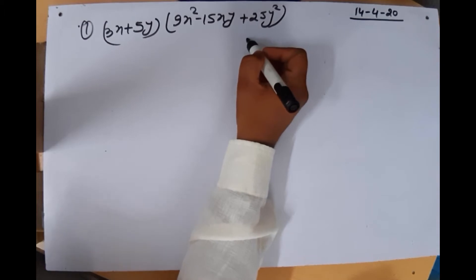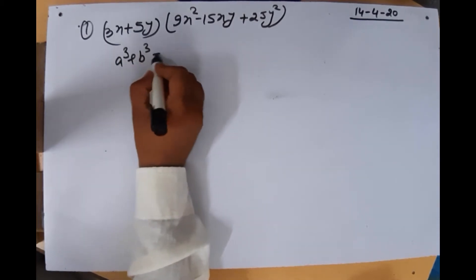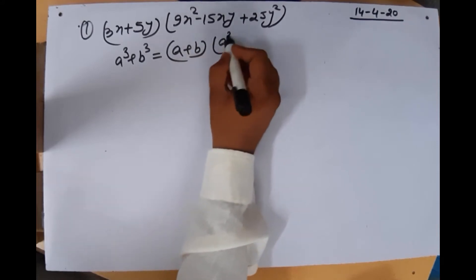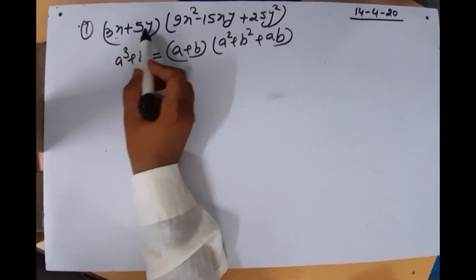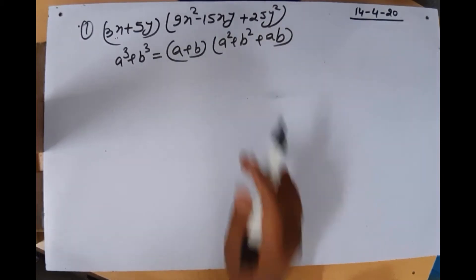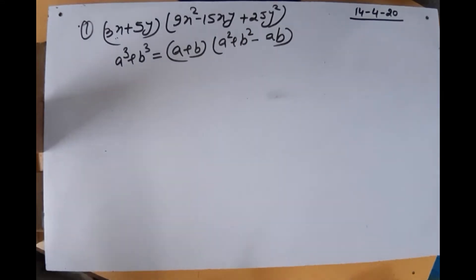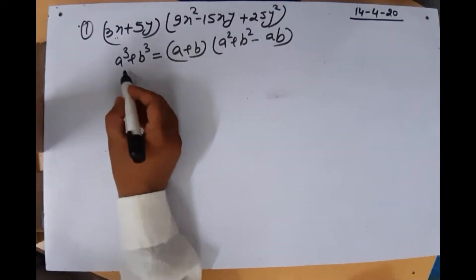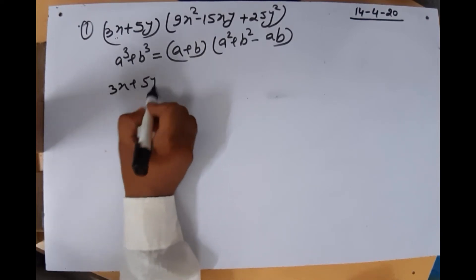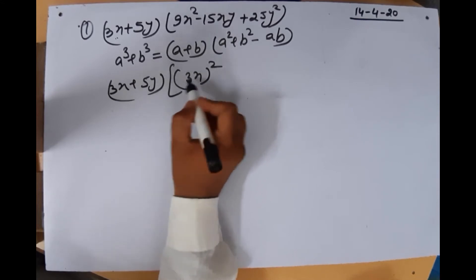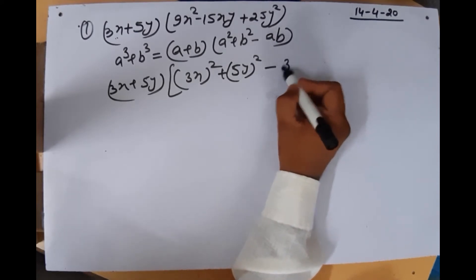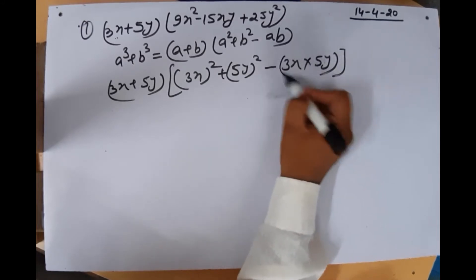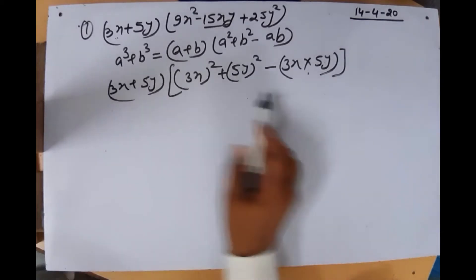In this question we can recognize the identity a³ + b³ = (a + b)(a² + b² − ab). Here we can write the second bracket as (3x)² + (5y)² − (3x)(5y), which gives 9x² + 25y² − 15xy. So this matches the identity with a = 3x and b = 5y.